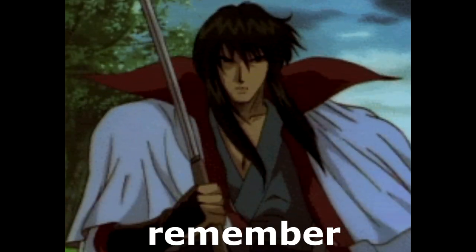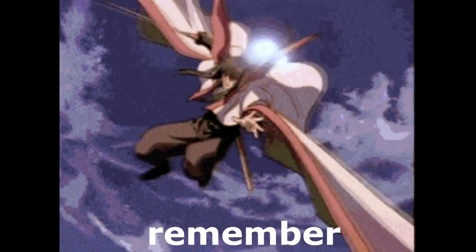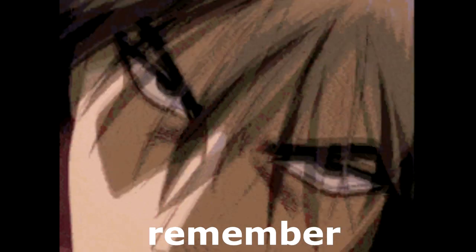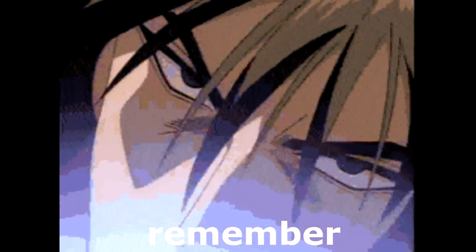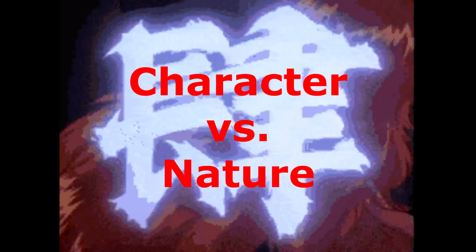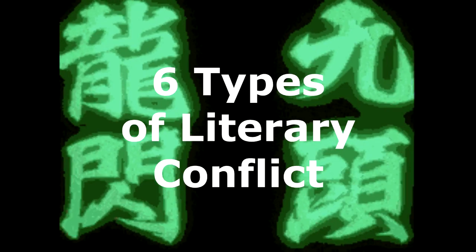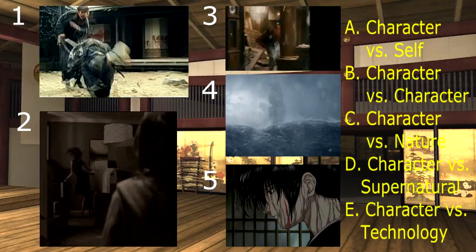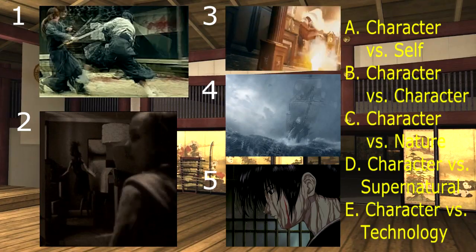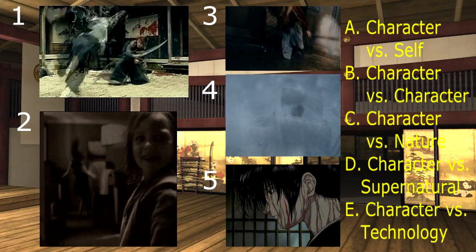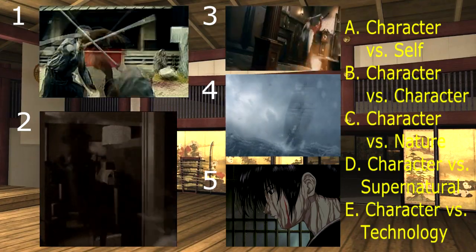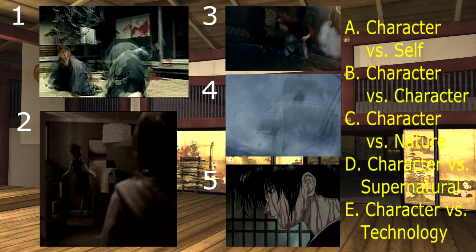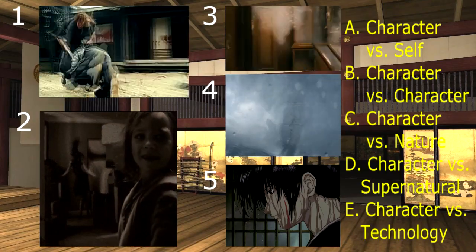Remember that the 6 types of literary conflict are: Character vs. Self, Character vs. Character, Character vs. Nature, Character vs. Supernatural, Character vs. Technology, and Character vs. Society. Now let's have an activity. You are going to analyze the moving pictures then match them to the correct type of literary conflict in the right column. I'll give you a moment to think about your answers.